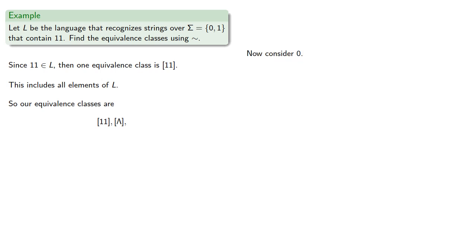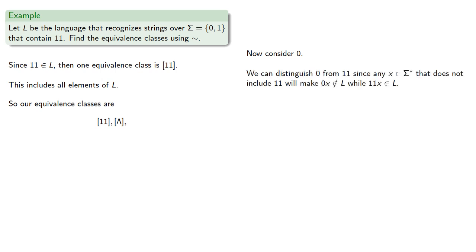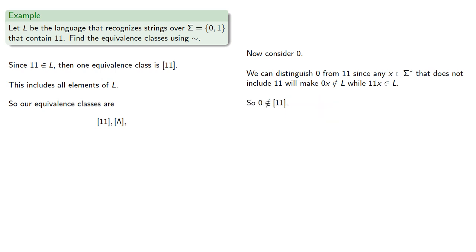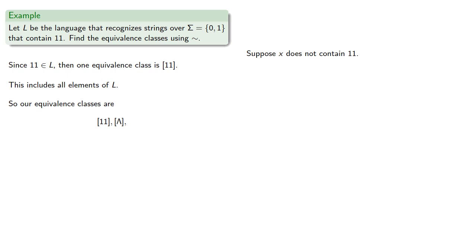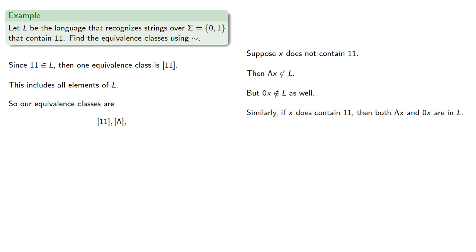Now consider strings of length 1, for example 0. We can distinguish 0 from 11, since any string that does not include 11 will make 0x not in L, while 11x is. So 0 is not in the equivalence class of 11. But can we distinguish 0 from the equivalence class generated by the empty string? Suppose x doesn't contain 11. Then lambda·x is not in L, but 0x is not in L either. Similarly, if x does contain 11, then both are in L. So 0 and lambda are not distinguishable with respect to L, which means 0 is also an element of this equivalence class.